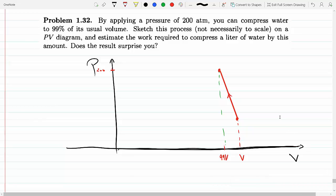Okay, so by applying 200 atmospheres, let's say we start at one. Assuming that this compression starts at 1 atm and goes up to 200, and the volume decreases from V to 0.99V.